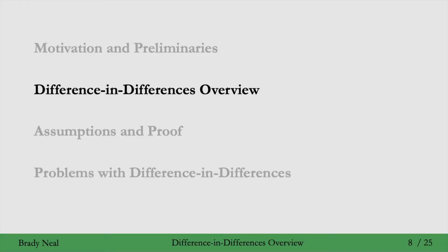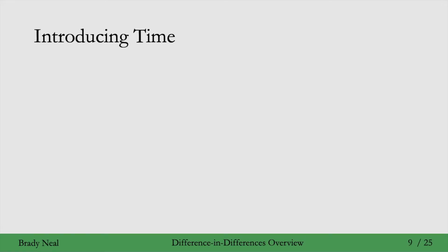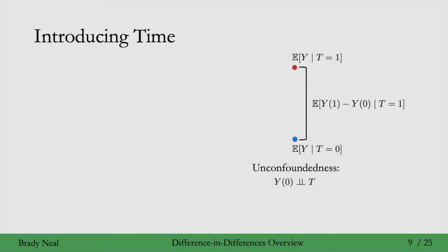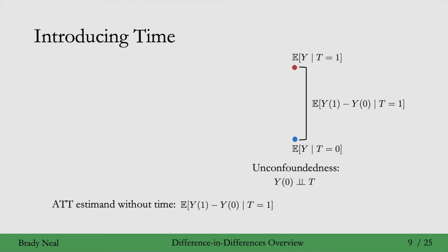We'll now move on to an overview of difference in differences. We'll often use the y-axis to represent the average outcome in the treated group and the average outcome in the control group, and the difference between them equals the average treatment effect on the treated, given the unconfoundedness assumption where Y0 is independent of treatment. By introducing time, we'll be able to get rid of this unconfoundedness assumption — we'll have to make other assumptions, but not this specific one.